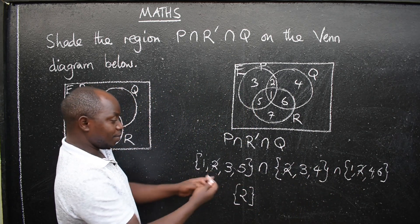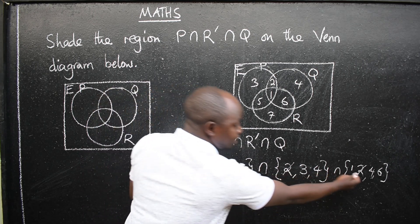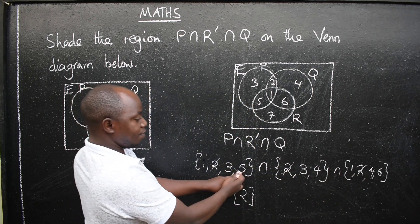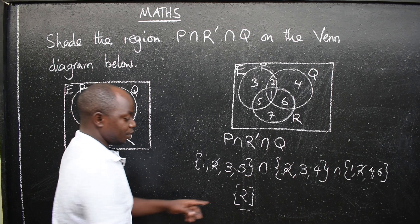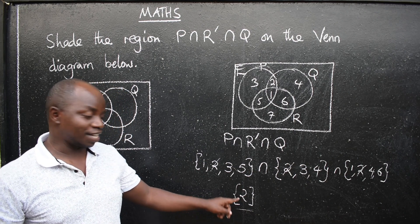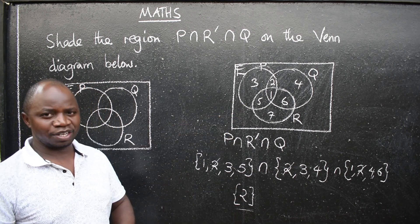So we have 2. Tell me the other elements. 3 here. 3 here. There's no 3 here. 5 here. No 5 here. So the correct answer is what? 2.